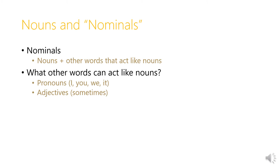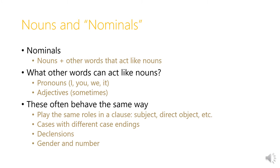So instead of talking about somebody being red, we might talk about the red person, or the red one. In Greek, you don't need 'person' or 'one' — you just say 'the red.' In those cases, adjectives in Greek in particular act as if they were nouns. They play the same roles in a clause: nouns, pronouns, and adjectives can all be subject of a verb, they can all be direct object of a verb, etc. And so they all have the same cases and tend to take different case endings. Many of the case endings you'll learn for nouns, you can apply directly to pronouns and to adjectives as well.